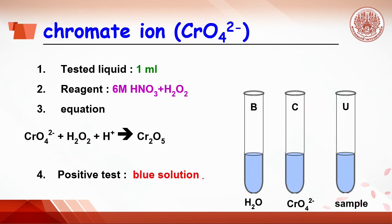Comes to chromate ion test. Do the same by adding water, chromate ion, and sample 20 drops each. Then, add nitric acid and hydrogen peroxide.